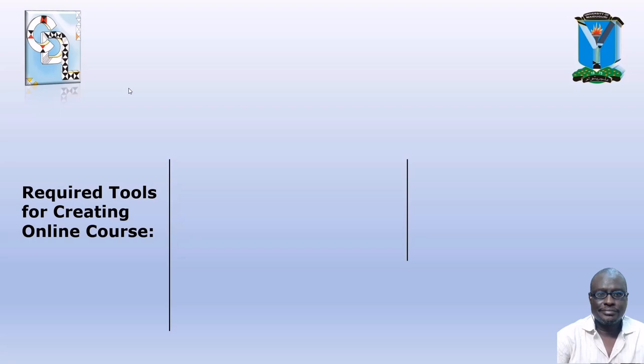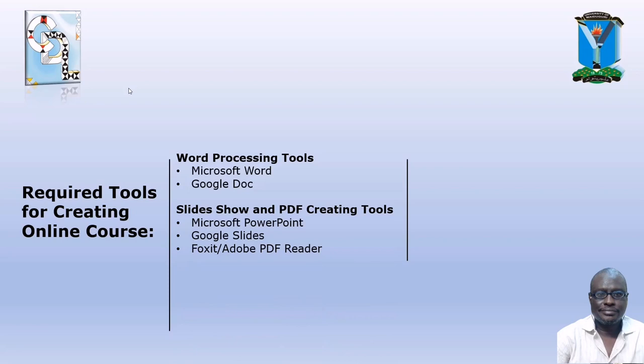I will deal with that in my subsequent episodes — just continue with me to learn more. Once you get on track, you can gradually upgrade to better software and equipment. Here is a highlight of some commonly used tools. For word processing: Microsoft Word and Google Docs. For slideshow and PDF creation: Microsoft PowerPoint, Google Slides, Foxit, Adobe PDF Reader, etc.